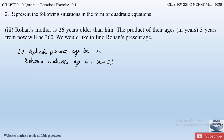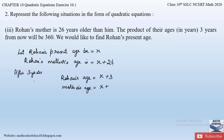After three years, we add 3 to both their present ages. Rohan's age after three years will be x + 3, and his mother's age after three years will be (x + 26) + 3 = x + 29. The product of their ages after three years is 360, so (x + 3)(x + 29) = 360.